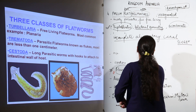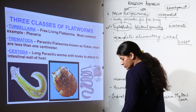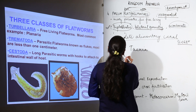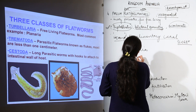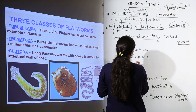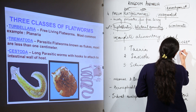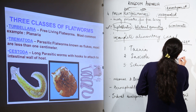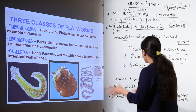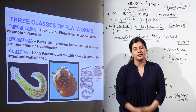Examples of platyhelminthes to remember include: Taenia — the tapeworm from consuming uncooked pork; Fasciola — the liver fluke; Echinococcus; Schistosoma — the blood fluke found in rice fields; and Planaria. These examples should be remembered, along with all the characteristics of platyhelminthes that distinguish them as a separate phylum.